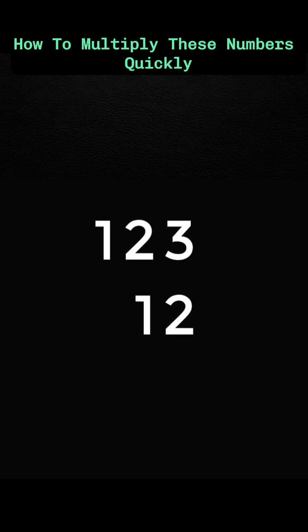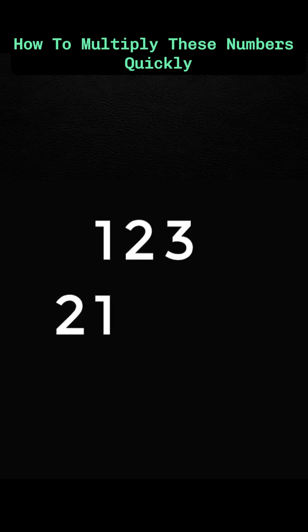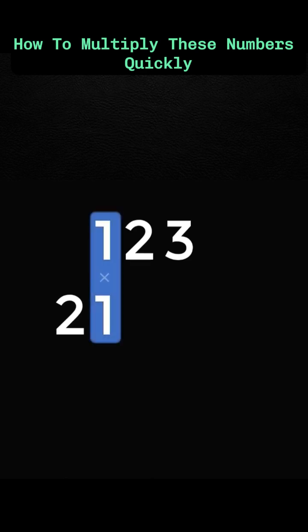First, slide the dozens number to the beginning of the hundreds number. Then swap the position of the dozens number. Multiply the parallel numbers.